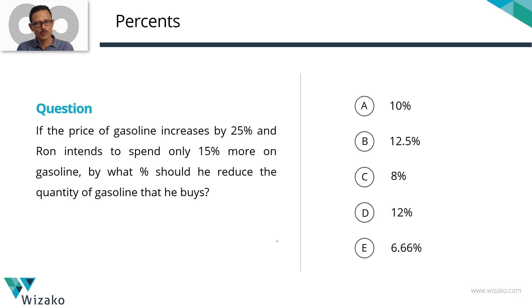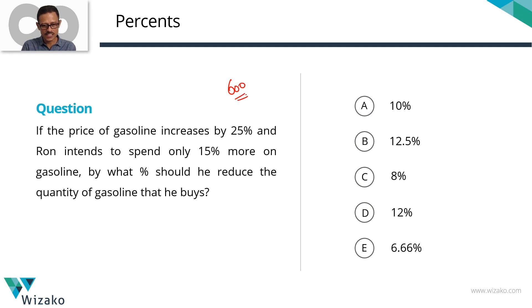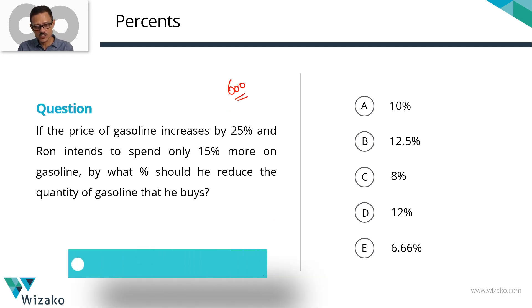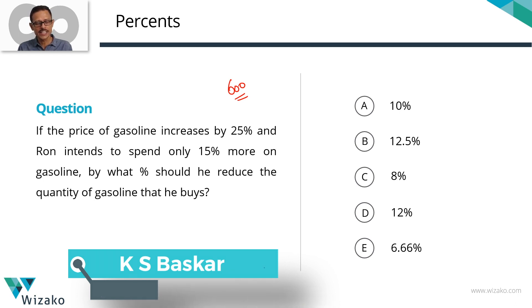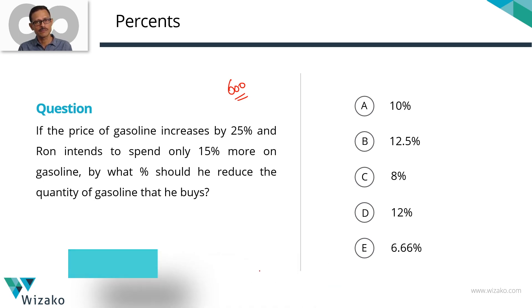This is an easy GMAT problem-solving question from the topic of percentages. It's a template question — classify this one as a 600-level GMAT sample question. If the price of gasoline increases by 25% and Ron intends to spend only 15% more on gasoline, by what percentage should he reduce the quantity of gasoline that he buys?